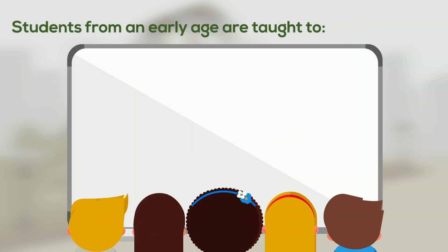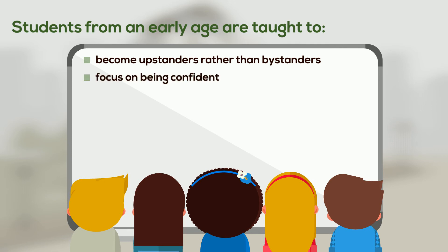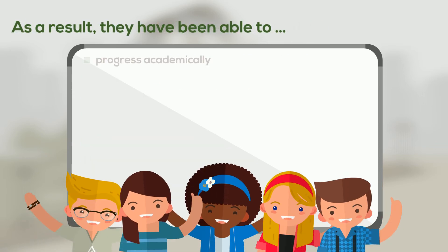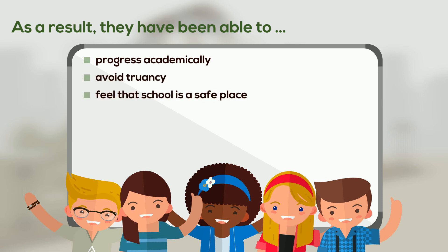Students from an early age are taught to become upstanders rather than bystanders. They are encouraged to focus on being confident, helped to question and reflect on their own behavior, helped to let go of their anxieties and fear of making mistakes and being ridiculed, and motivated to be kind to themselves and show empathy and compassion towards their peers. As a result, they have been able to progress academically and avoid truancy, mainly because they now feel that school is a safe place. Being rewarded with kindness has impacted their lives hugely and reduced the number of behavioral referrals taking place at the school.